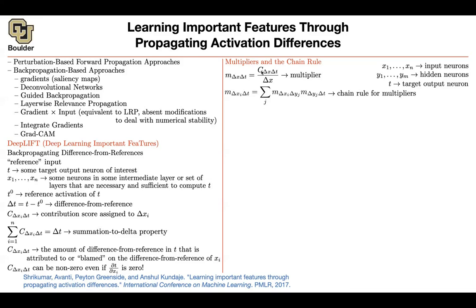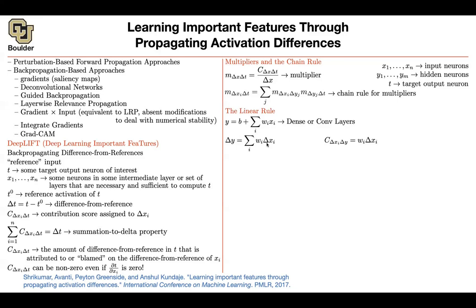In the previous paper, these multipliers m were coming out of SHAP values for each layer. Here they come out of these c's. For instance, if you have a linear layer — dense or convolutional — you have y = b + Σwᵢxᵢ. If you take Δy, b cancels, giving you Σwᵢ·Δxᵢ. For a linear layer, c is defined as wᵢ·Δxᵢ. Dividing by Δxᵢ gives you the multiplier m(Δxᵢ, Δy), which is basically your coefficient wᵢ. So this is what you're backpropagating, and it makes sense.